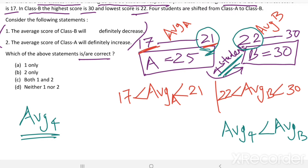When a number which is less than the average of class B is added to class B, the average shifts towards the left — it decreases. So we can say the first statement, that the average score of class B will definitely decrease, is true.